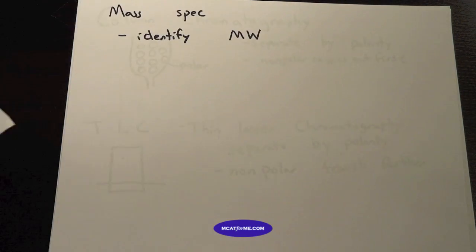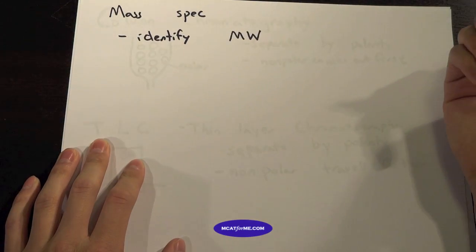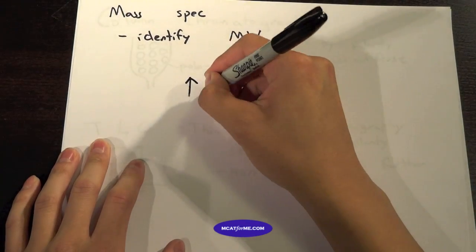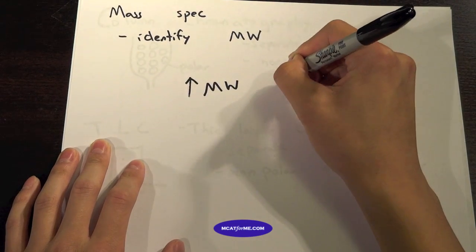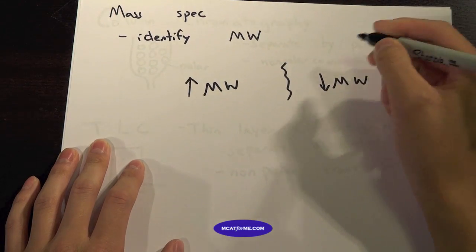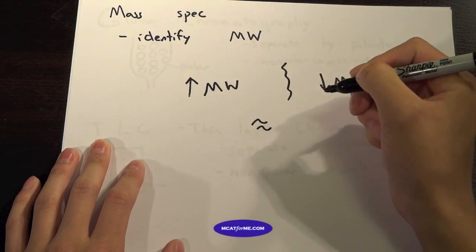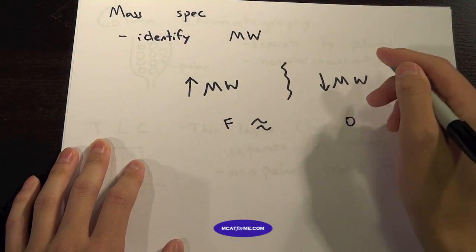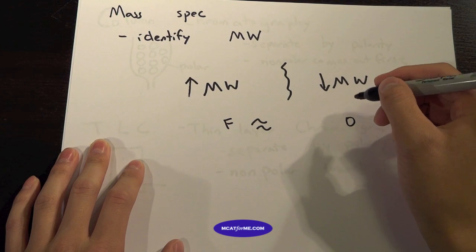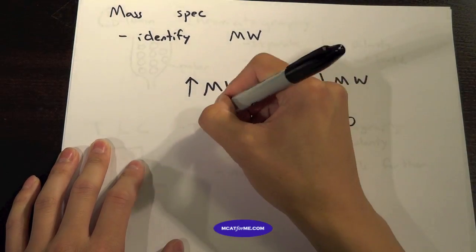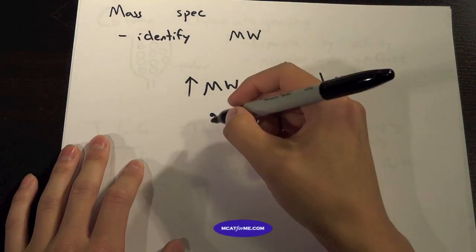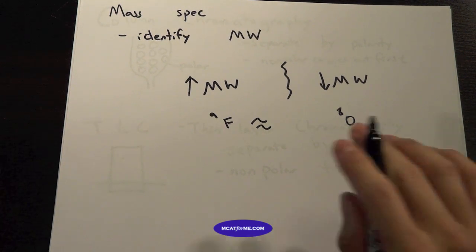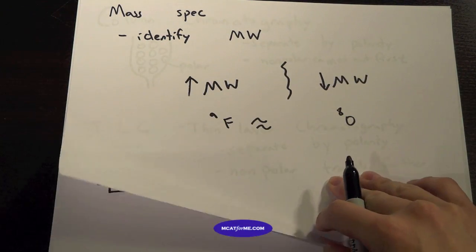We'll start off with mass spec. Mass spec identifies things by molecular weight. Something that has a very high molecular weight will be separate completely from something with a very low molecular weight. But if they're roughly equal, and especially in the case that we have, fluorine and oxygen are very close on the periodic table. One has a proton number of eight, and one has a proton number of nine. So they're very close in mass number.